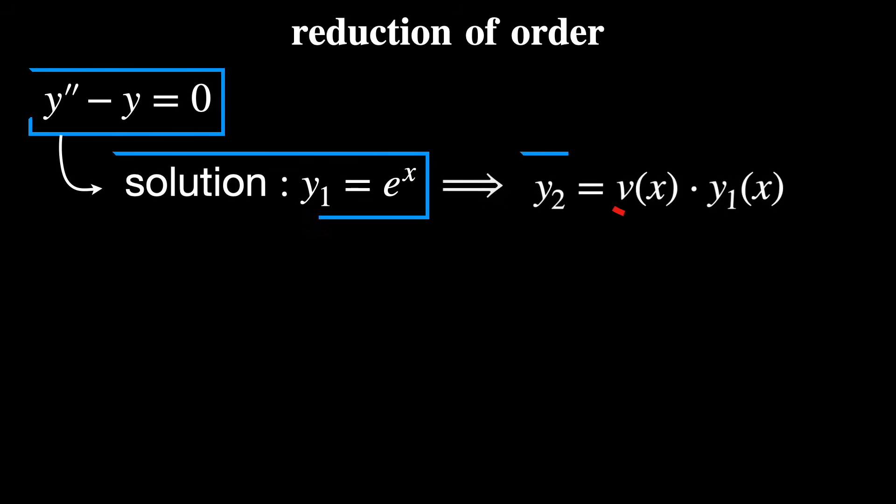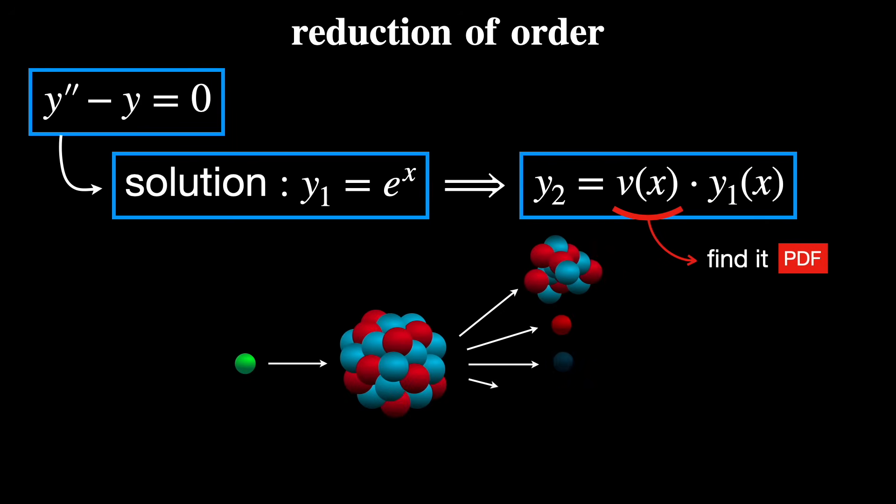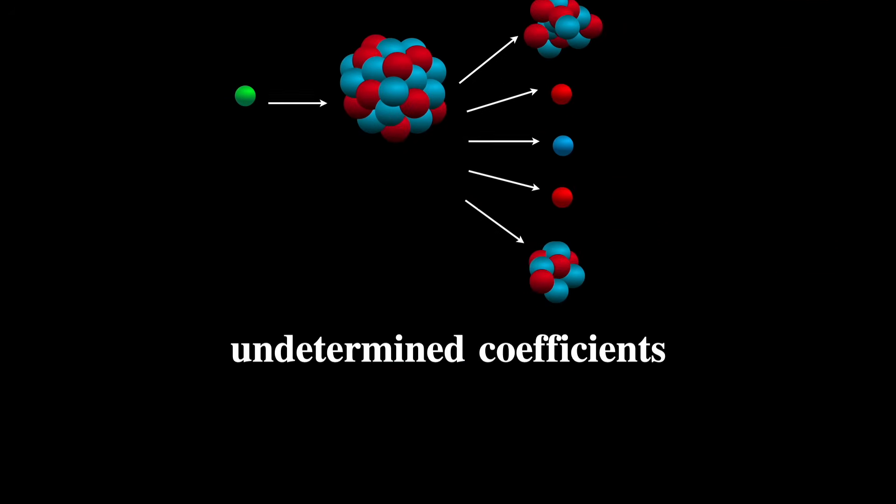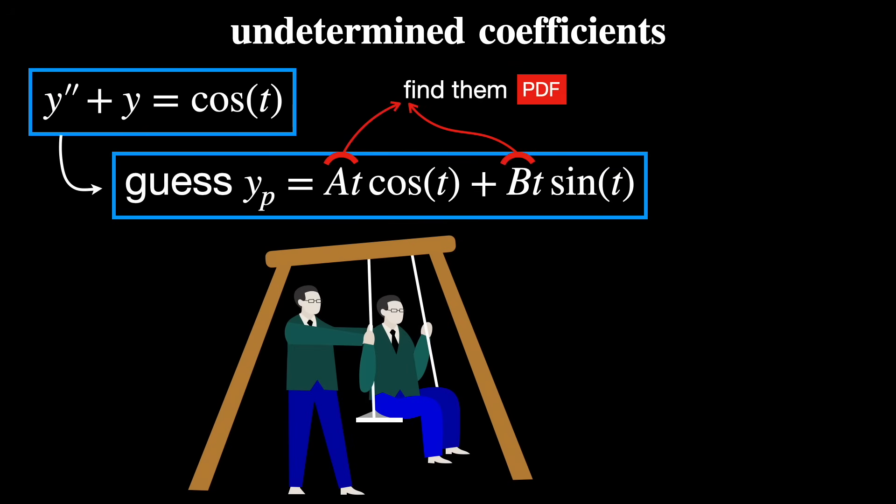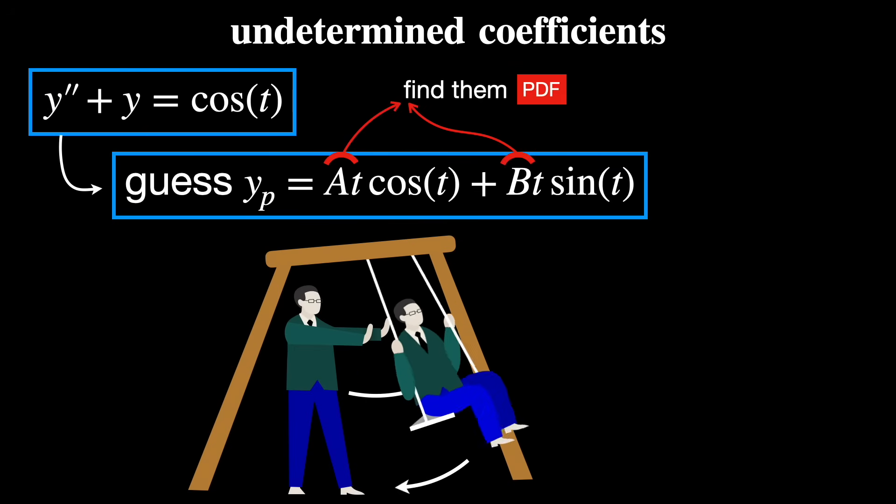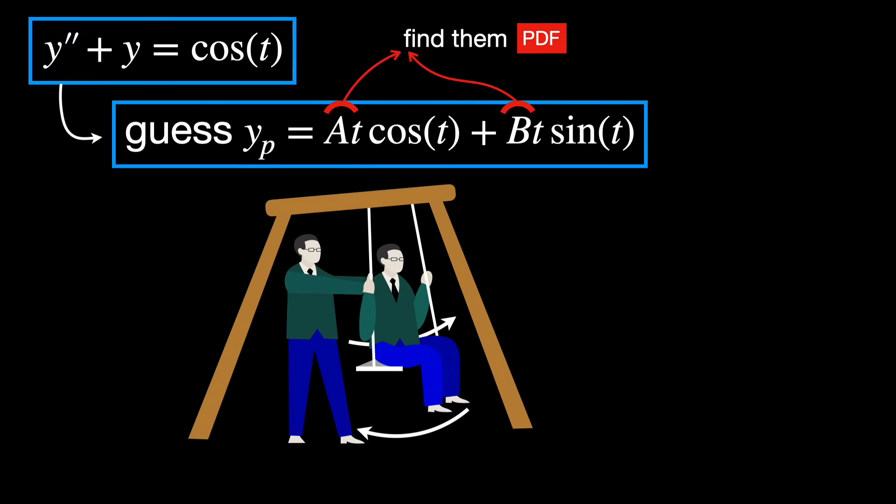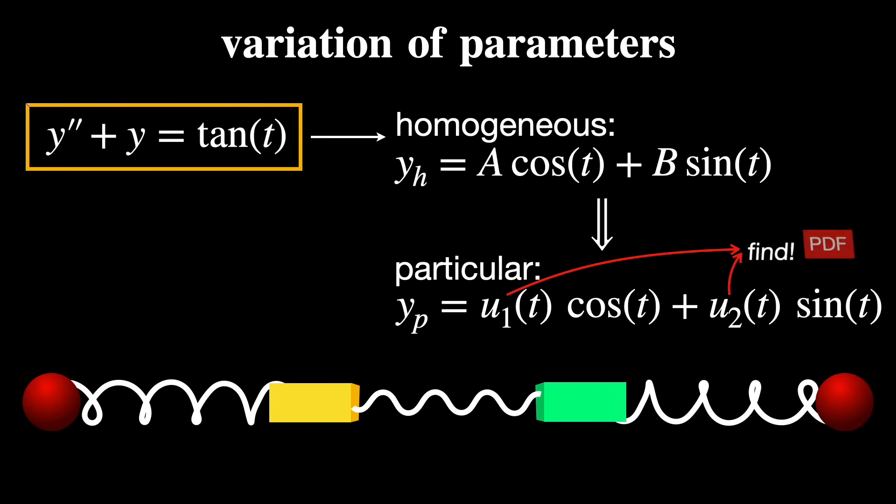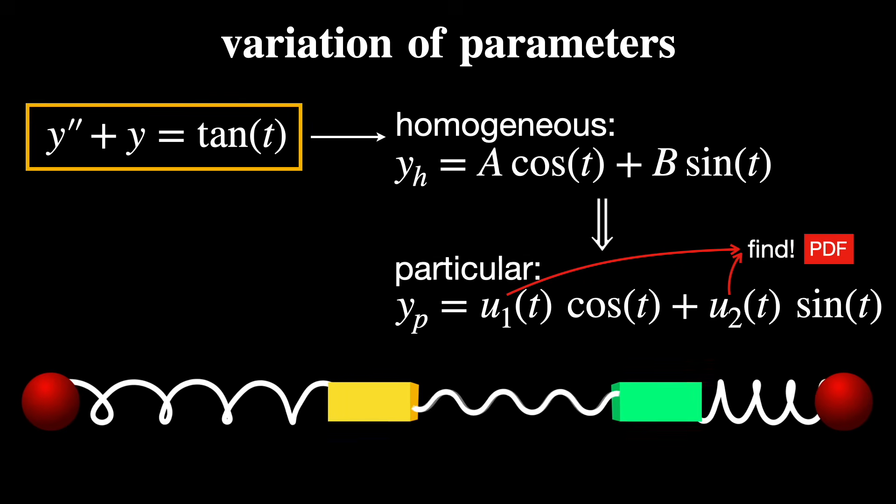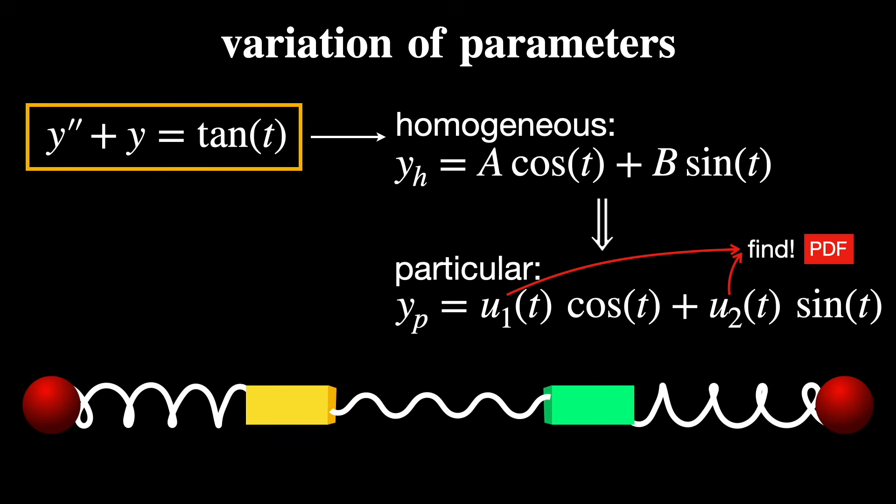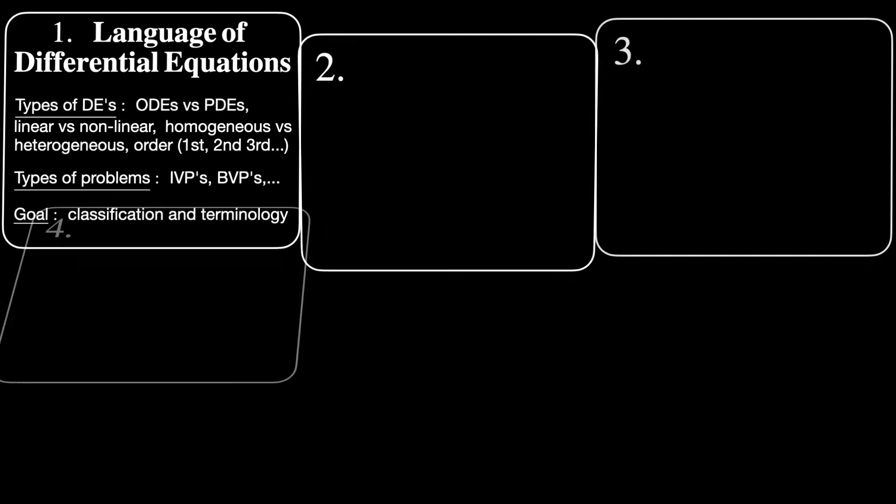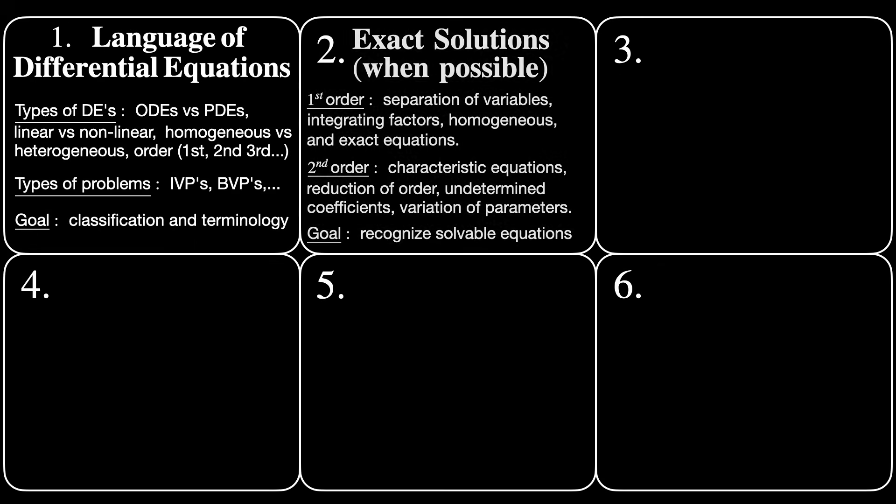Another method is reduction of order, like in a chain reaction in nuclear fission. You might also need to know how to work with undetermined coefficients, like in a forced and damped harmonic oscillator. Or even the method of variation of parameters to handle non-homogeneous terms, like in a forced and damped harmonic oscillator with irregular forcing. Therefore, that's your goal in the second stage: be able to recognize solvable solutions and then solve them.